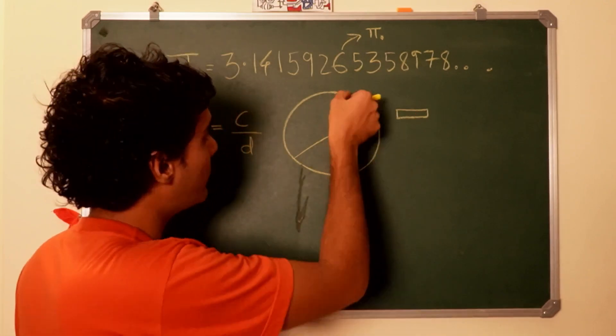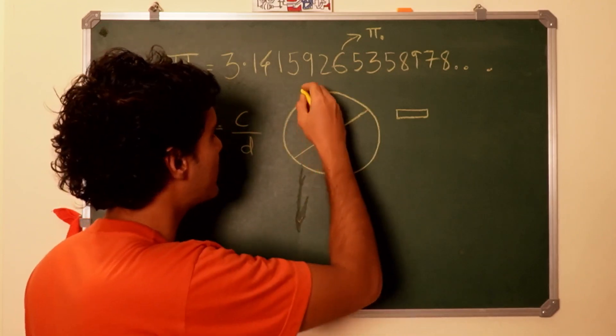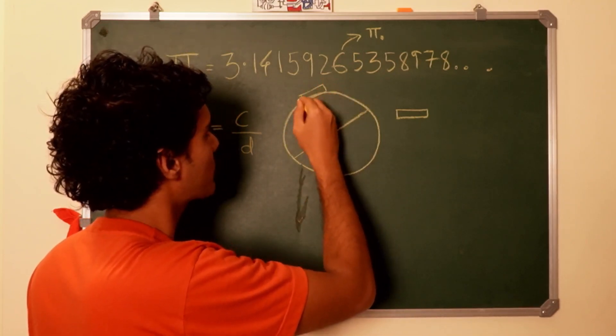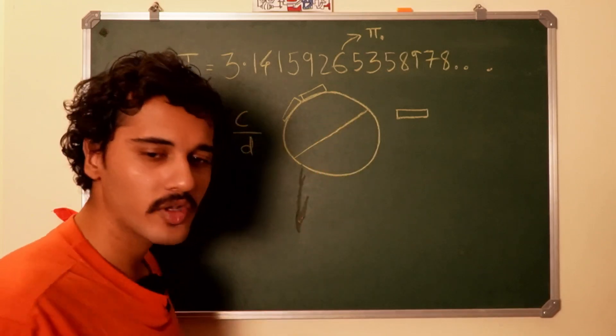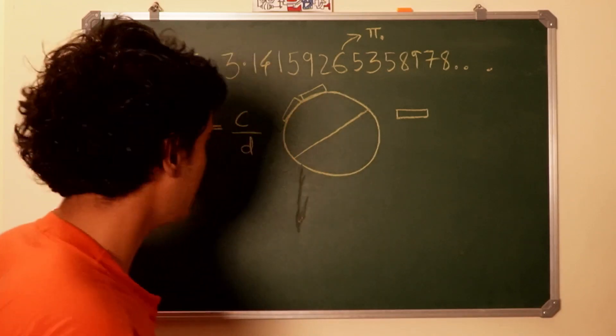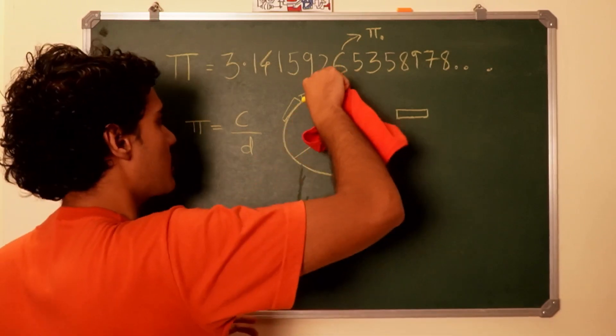It would still obviously on a microscopic level look like this and not perfect, and that is why you have to imagine an infinite number of these scales.